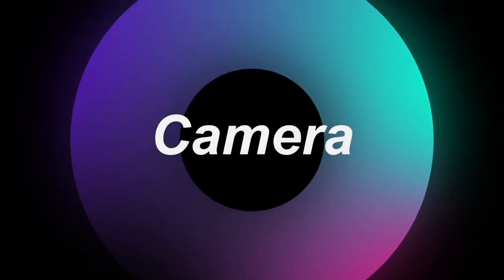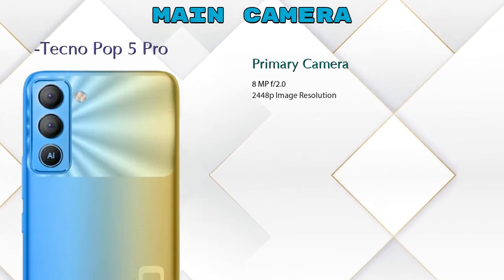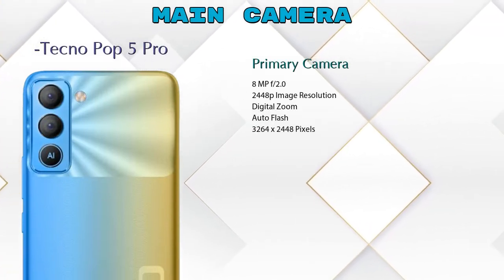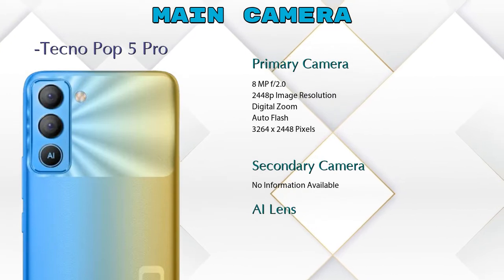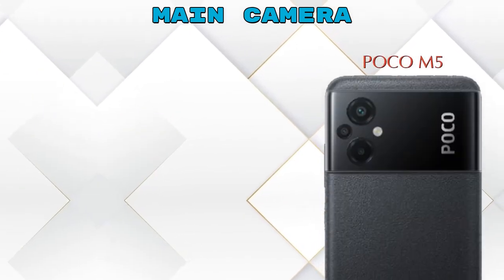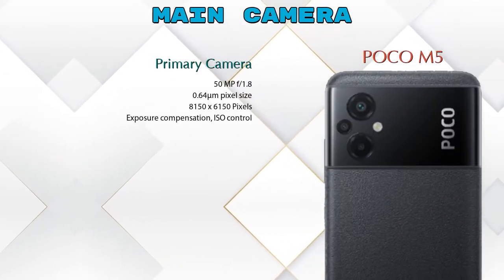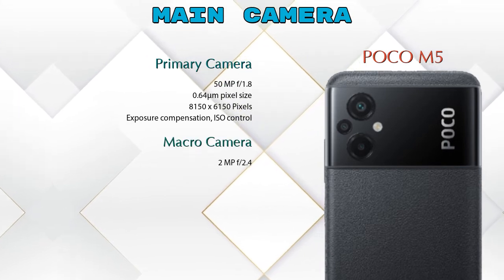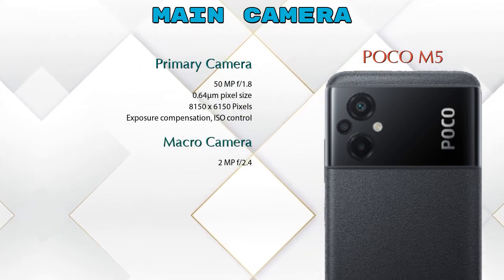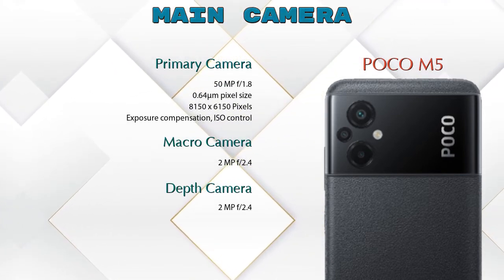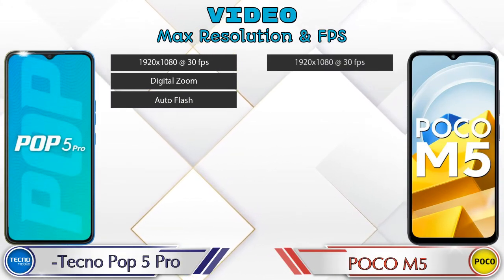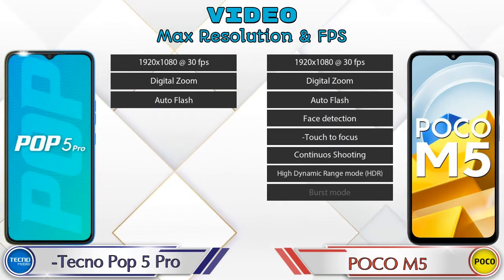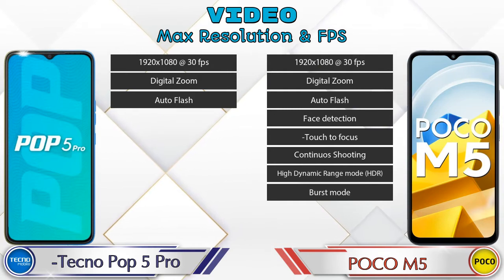Now let's talk about our favorite features — camera. For the rear camera, Pop 5 Pro has three cameras: a primary camera, a secondary camera, and an AI lens. Poco M5 also has three cameras: a primary camera, a macro camera, and a depth camera. For video, Pop 5 Pro has three options and Poco M5 has eight different types of features available.